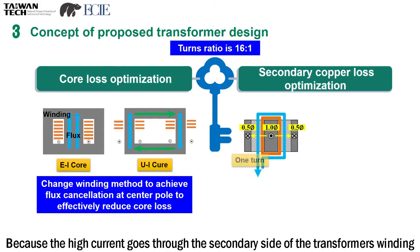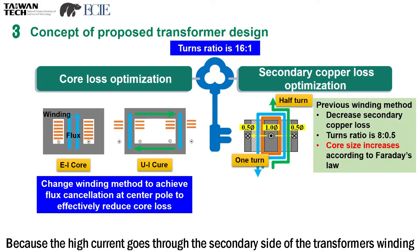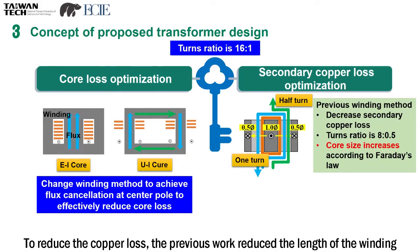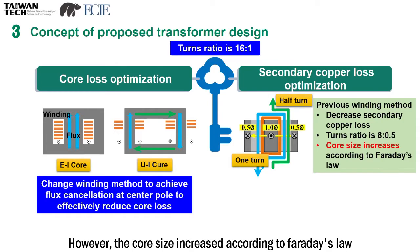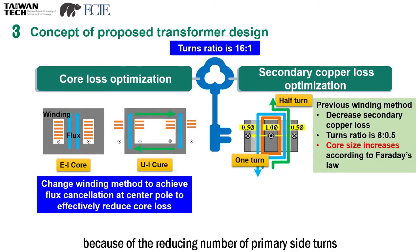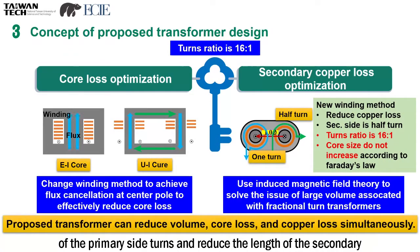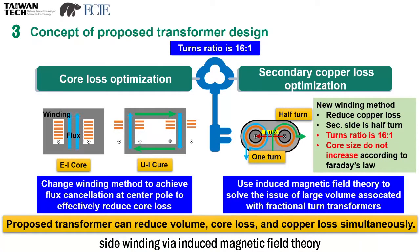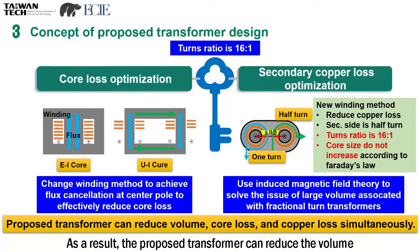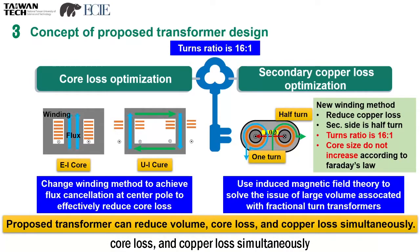Because high current flows through the secondary side winding of the transformer, the copper loss is high. To reduce it, previous work reduced the length of the winding; however, the core size increases according to Faraday's law due to the reduced number of primary side turns. This work proposes a new winding method that maintains the same number of primary side turns and reduces the length of the secondary side winding via induced magnetic field theory. As a result, the proposed transformer can reduce the volume, core loss, and copper loss simultaneously.